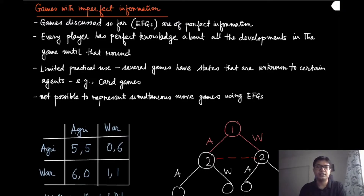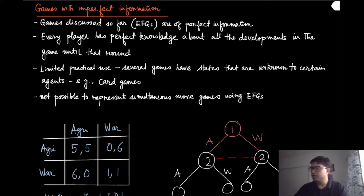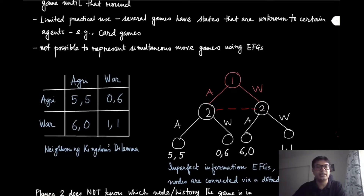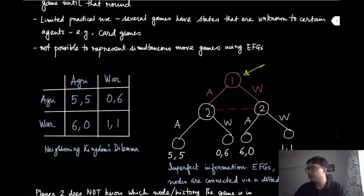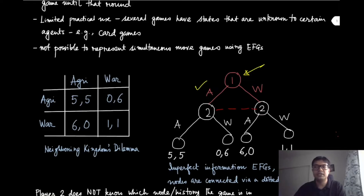If we talk about simultaneous move games — for instance, the normal form games like the neighboring kingdoms dilemma — we cannot represent those using perfect information. In the classic neighboring kingdoms dilemma, when one player picks its action, it does not know the other player's action. This indistinguishability is not captured by the perfect information extensive form game. If we draw the graph where player one has chosen but not disclosed its action, player two cannot tell whether player one chose A or W.